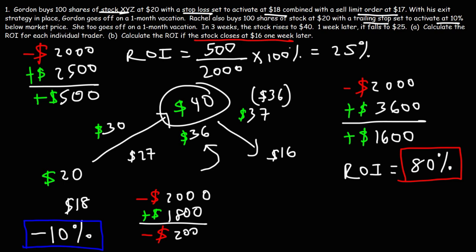Now Rachel had a better exit strategy because not only did it offer her downside protection, but it allowed her to participate in the gains of the stock. She was able to sell her shares at $3,600 and not at $1,800.